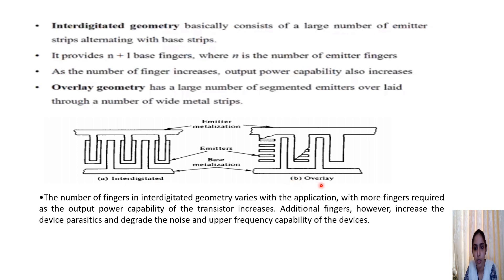Next is the overlay geometry. Here also the emitter and base are metallized, but the difference is that we have segmented emitters. These segmented emitters are overlaid onto wide metal stripes. The overlay geometry has a large number of segmented emitters overlaid through wide metal stripes.